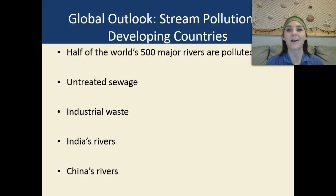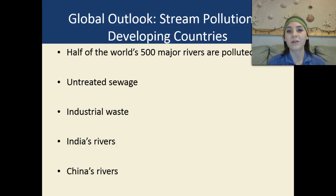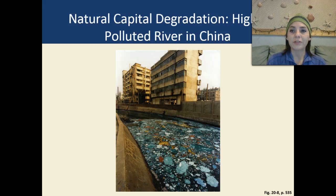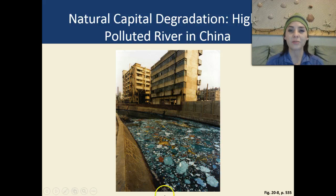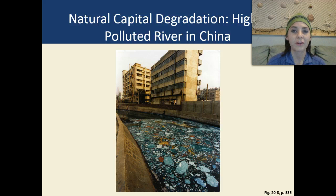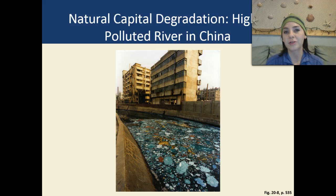Two large examples are India and China's rivers. They're extremely polluted — toxic not only to the animals and plant life that live there, but also to the humans that live around them. This is an example of a very highly polluted river in China. As you can see, not only is there a lot of garbage, but there are algal blooms, a lot of anaerobic bacteria, and heavy metals from industrial pollution.